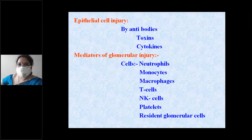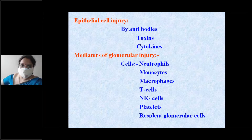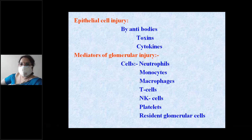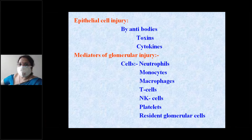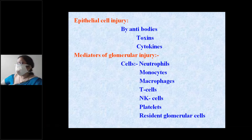Epithelial cell injury to visceral epithelial cells in the glomeruli can occur via antibodies and certain toxins and cytokines. Inflammatory mediators of glomerular injury include neutrophils, monocytes, macrophages, T-lymphocytes, natural killer cells, platelets, and certain glomerular cells.